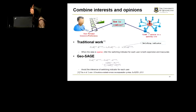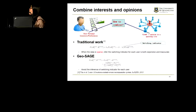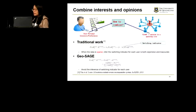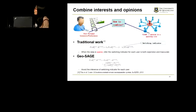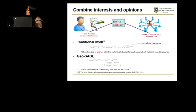How can we combine the user's interest and the cross opinion? According to traditional work, we can introduce a switching indicator to combine the two variables. However, we find that when the data is sparse, the inference of a switching indicator for each user is both expensive and inaccurate. Inspired by the sparse additive generative model, we avoid the inference of the switching indicator for each user by adding the impact of the two variables in exponential space.